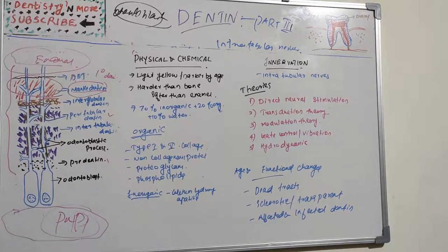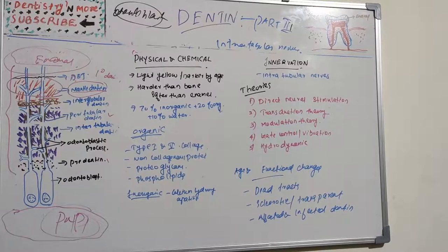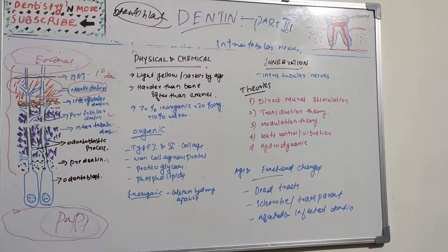The transduction theory proposes that the odontoblast process is the primary structure excited by the stimulus, and the impulse is transmitted to nerve endings in the inner dentine. The drawback is that there are no neurotransmitter vesicles in the odontoblast process to facilitate synaptic specialization, so this theory is also not well accepted.